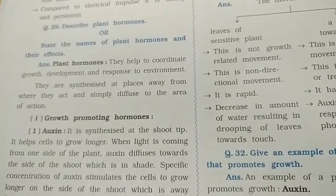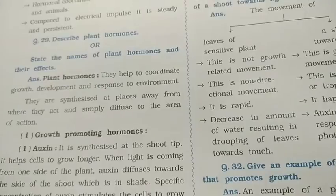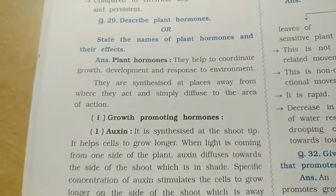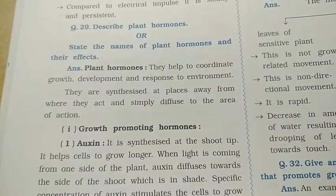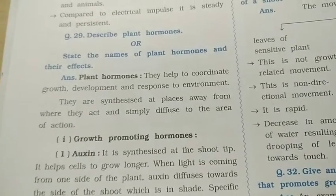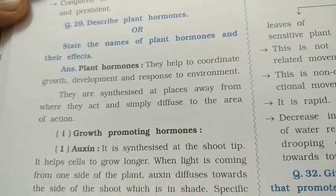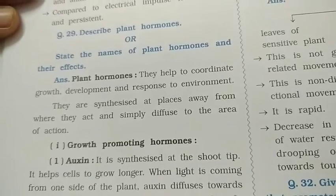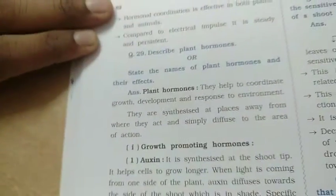Lecture number three: describe plant hormones, state the names of plant hormones and their effects. Plant hormones help to coordinate growth, development, and response to the environment. They are synthesized at a place away from where they act and simply diffuse to the area of action.